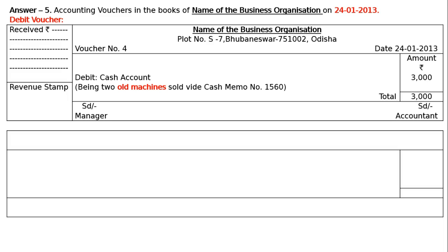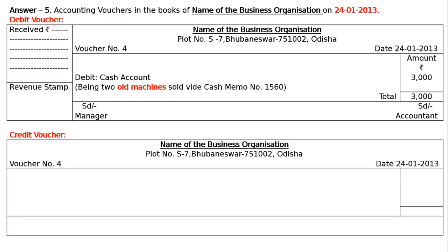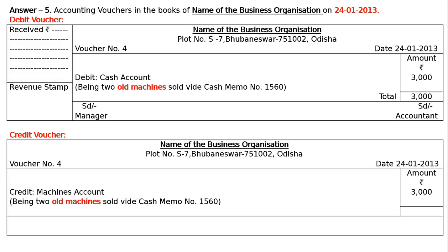SD Manager signature towards the left end and SD Accountant towards the right. For the credit voucher: name of the business with address, voucher number four towards the left end, date 24th January 2013 on the right with amount and rupee symbol. Credit will be given to Old Machines Account — machine is an asset and asset is decreased; decrease in asset is credited. Rupees 3000. Total: rupees 3000. Narration: 'Being two old machines sold, vide cash memo number 1560.' SD Manager on the left, SD Accountant on the right. This is the final answer.